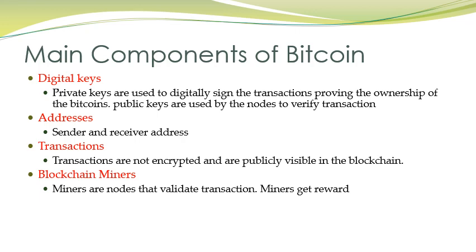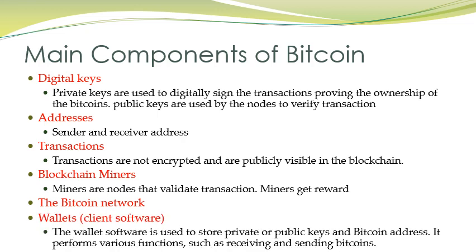Transaction is the core of the Bitcoin network. Transactions are not encrypted and are publicly visible in the Bitcoin network. Miners are nodes that validate and verify transactions, and for verifying transactions, miners get a reward. The Bitcoin network is a peer-to-peer network — nothing but the blockchain network — and blockchain provides the infrastructure for Bitcoin. The wallet is software on the client side that users can use to receive and send Bitcoin, store private and public keys, and also store Bitcoins.